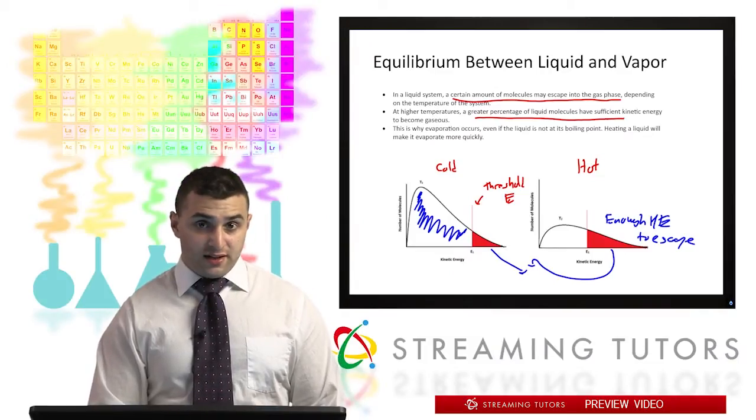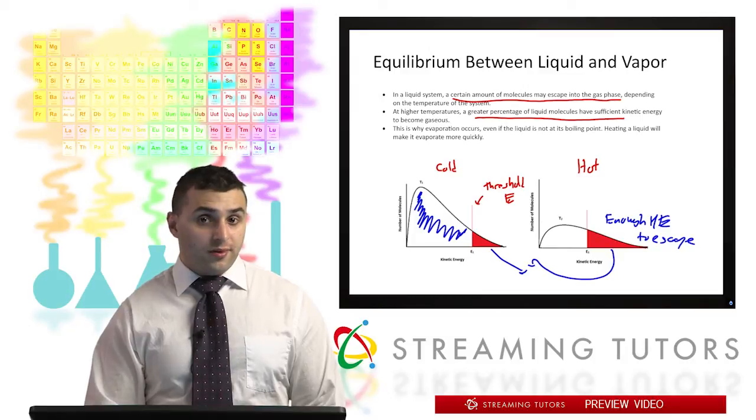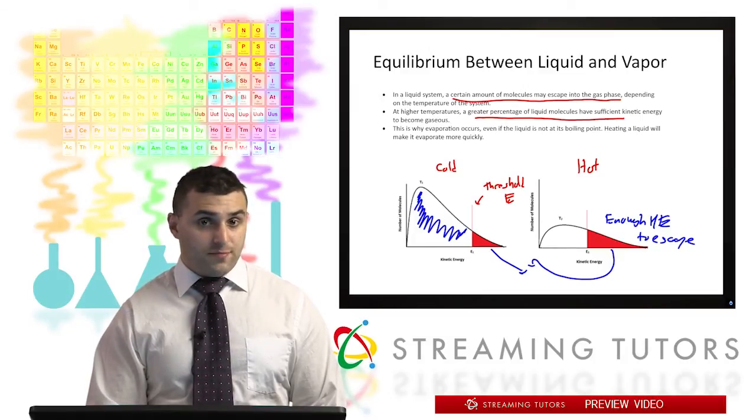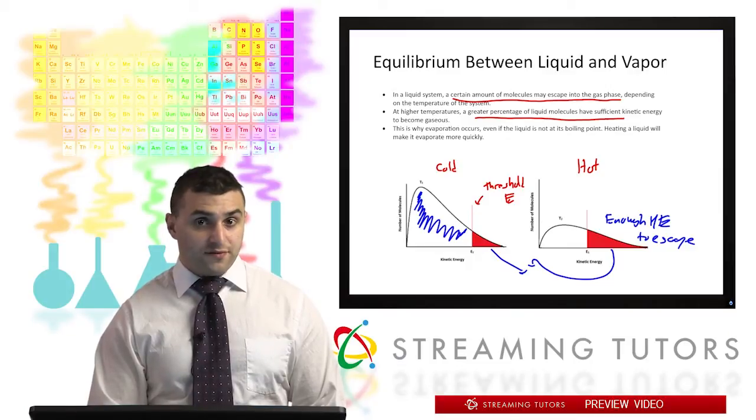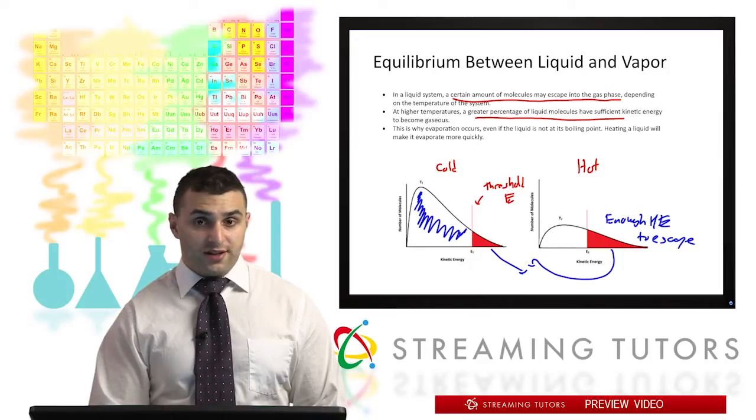Okay, so there's definitely a dependence of the equilibrium point between a liquid and vapor based on the temperature of the system. What we can say is that if the temperature is higher, we're generally going to have a higher amount of molecules in the gaseous phase.